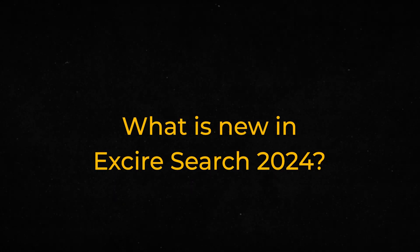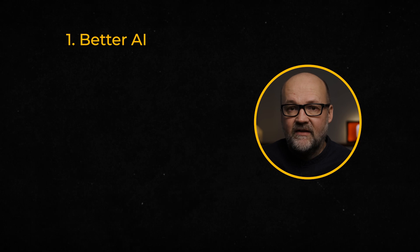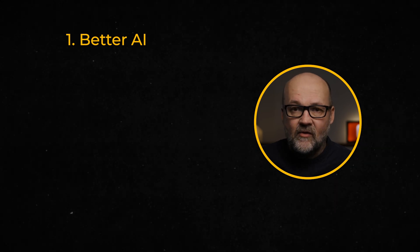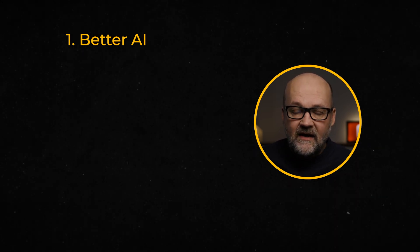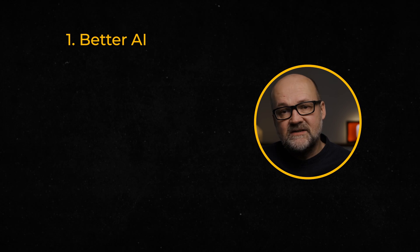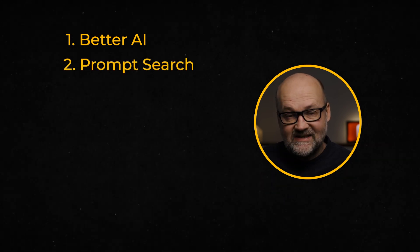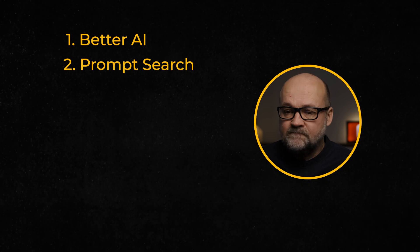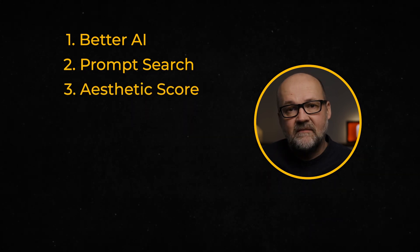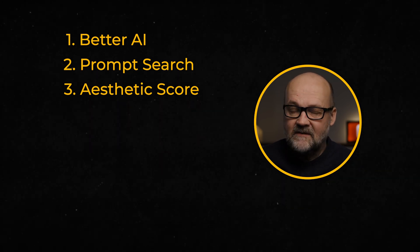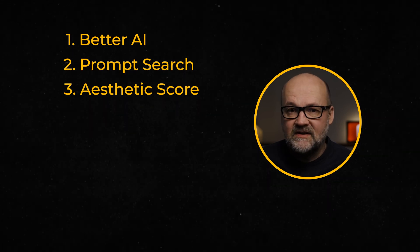What's new in Exire Search 2024 compared to 2022? First of all, the AI has been improved so the results are better than in the previous version. There has been progress because AI has gotten better and more precise, trained with lots of images so it knows what certain things are. Then there is the new prompt search, where you can use more descriptive text to find images — it can understand written text so you can find images more easily. And then there is the aesthetics score, which determines how good images are by aesthetics and ranks them.